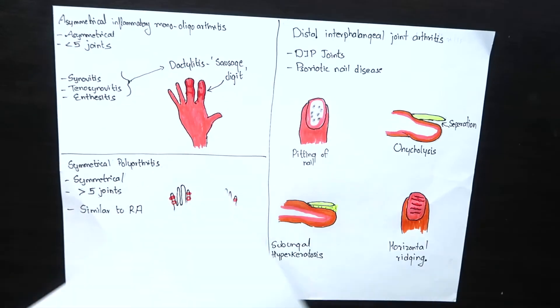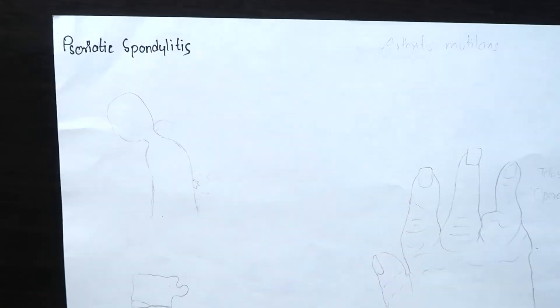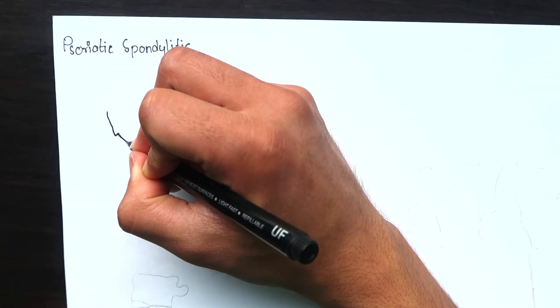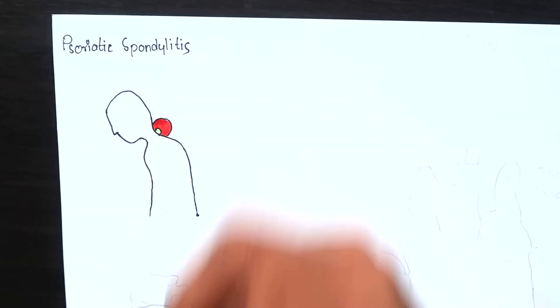The fourth one is psoriatic spondylitis. This type presents with inflammatory back or neck pain. Any structure in the spine can be involved. Intervertebral disc fusion can be seen.